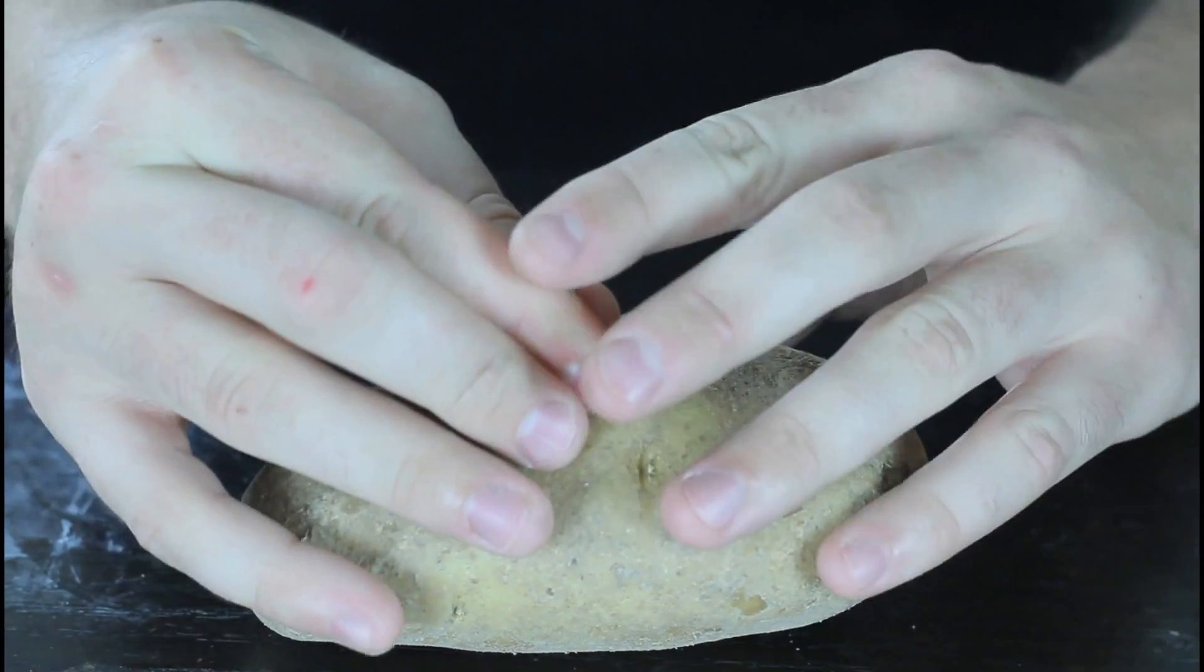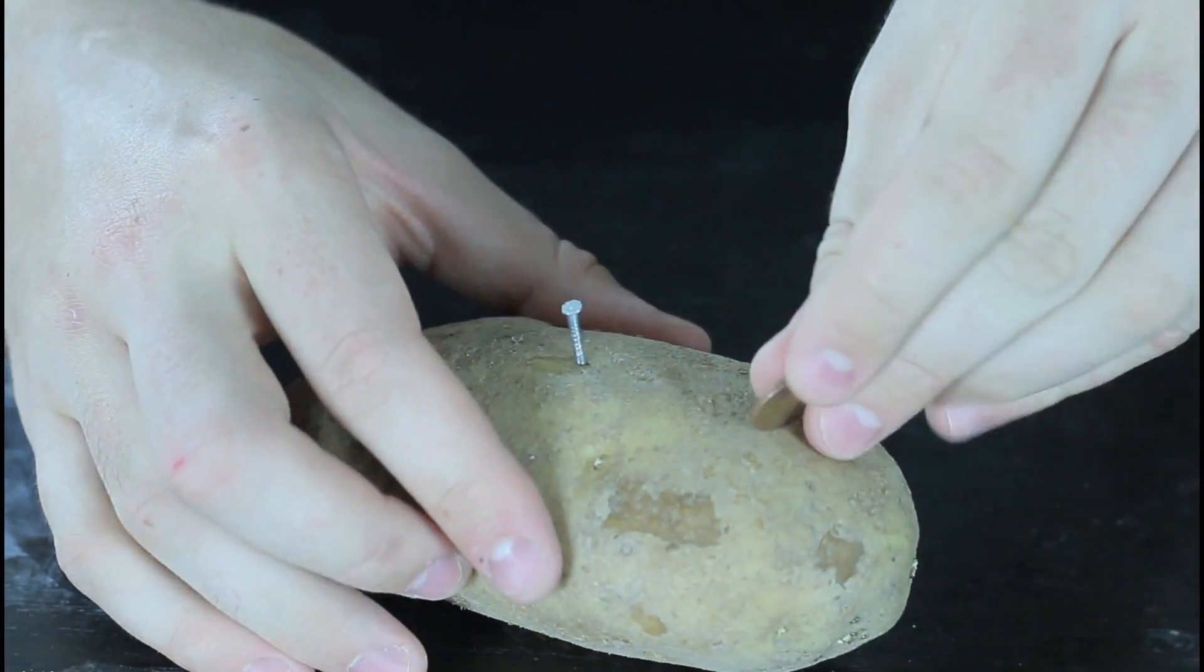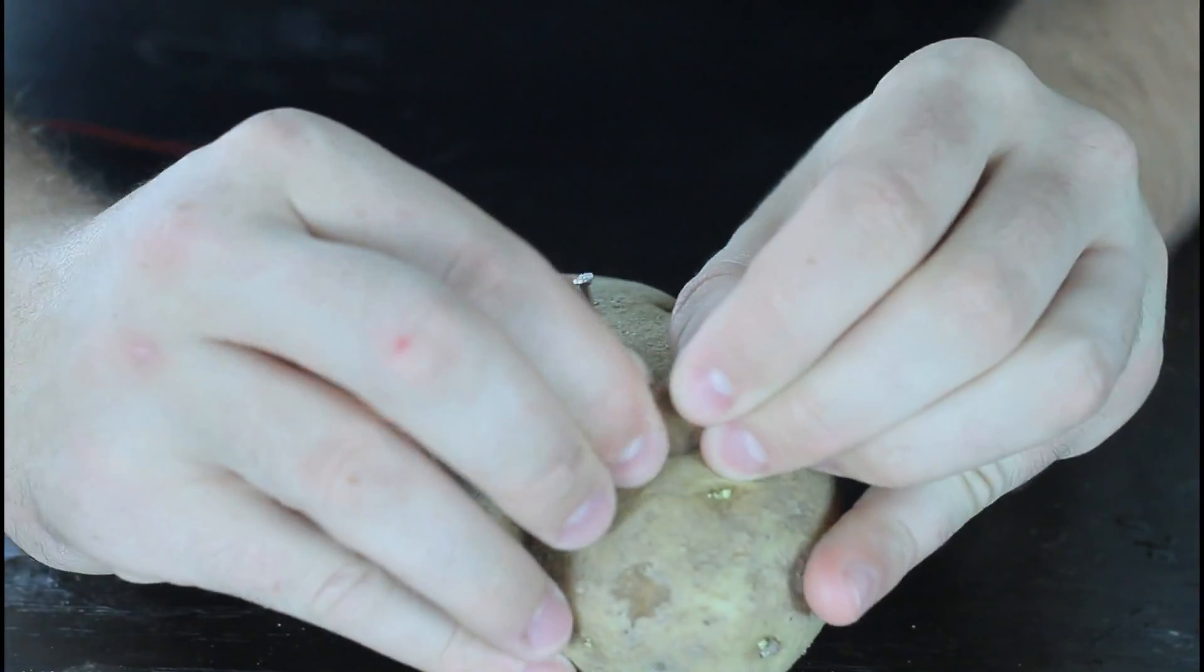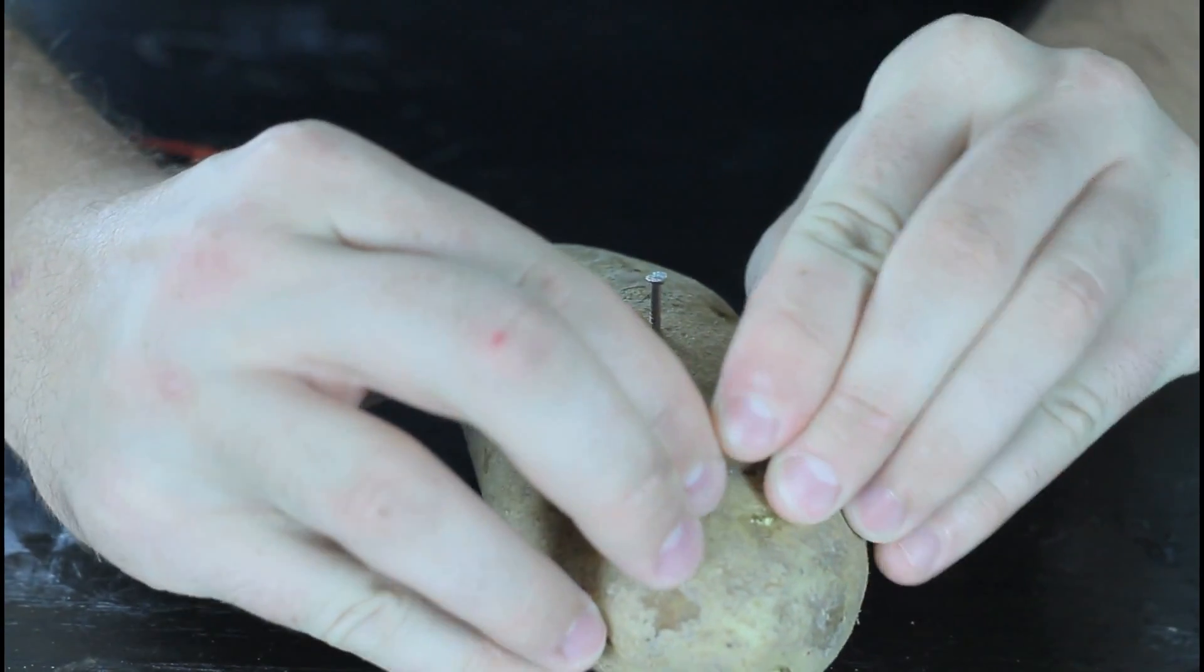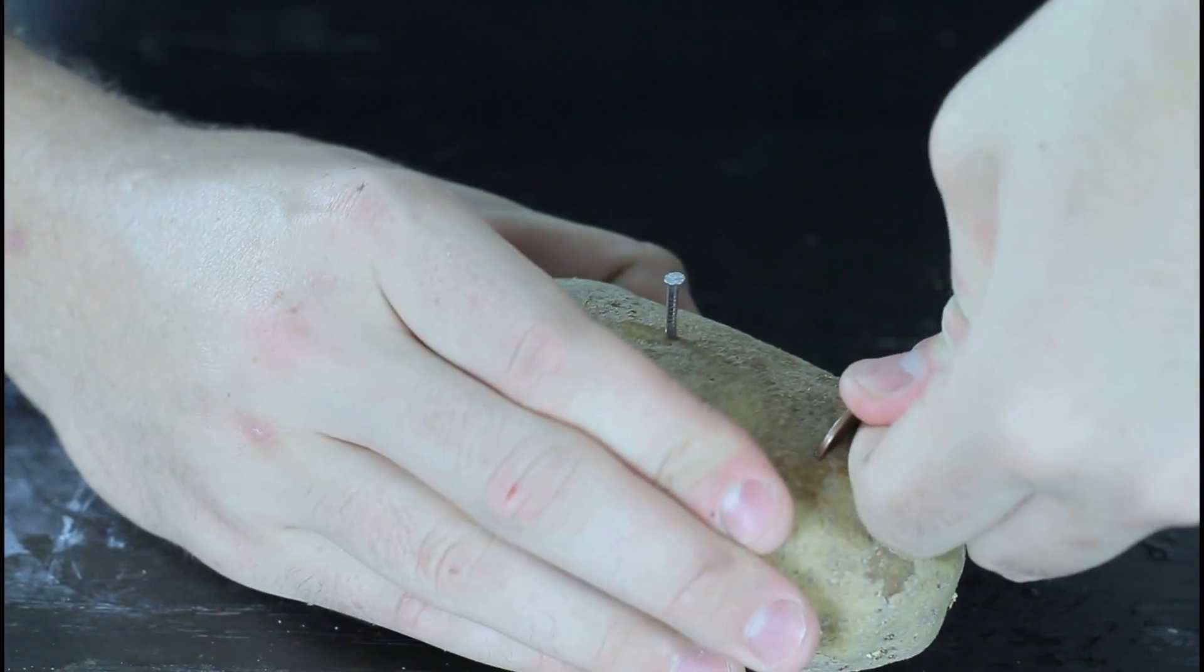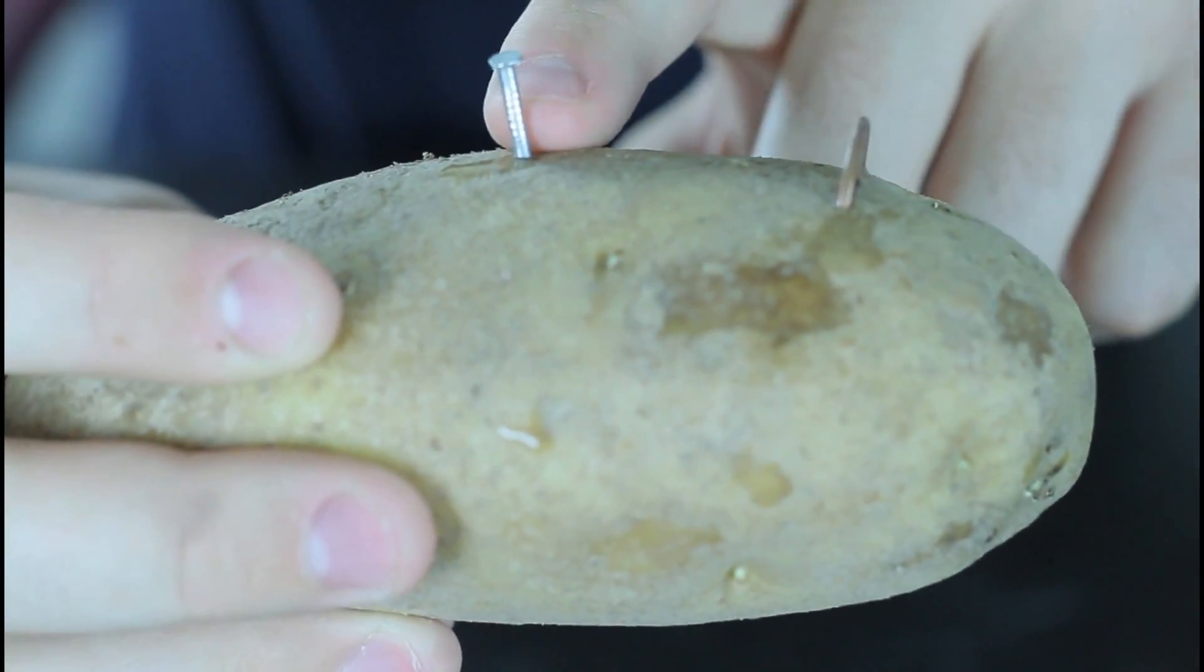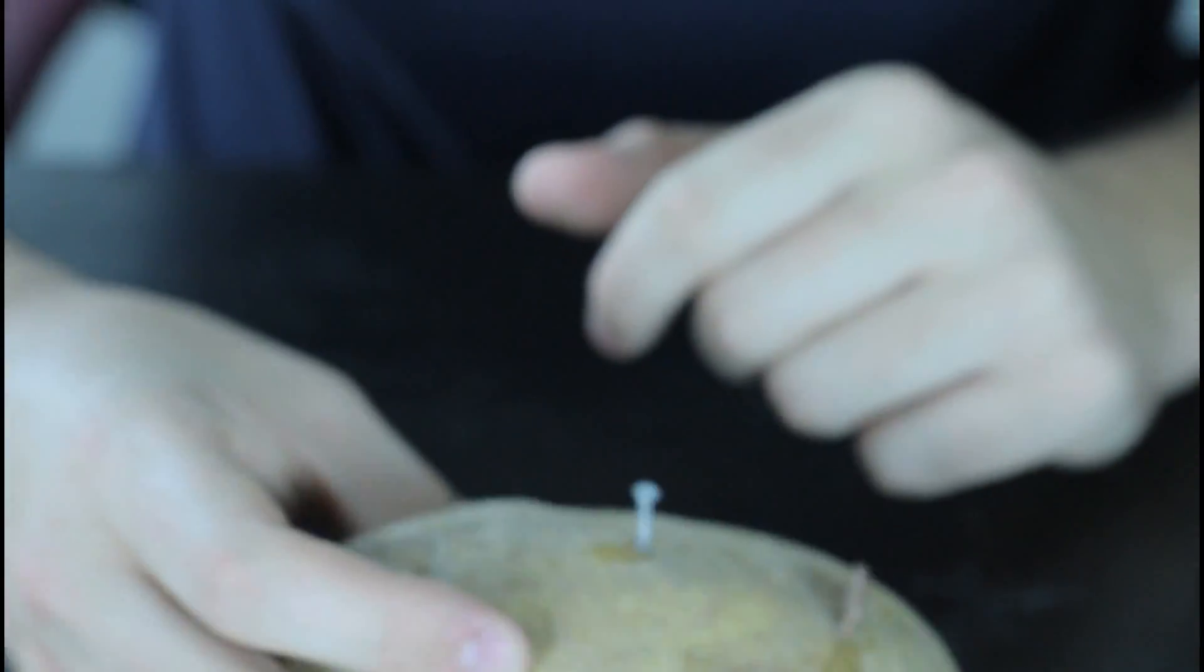Alright, we're gonna put a nail on one side and the penny on the other side. Like that. Just smash it in. It should be like halfway. Check it out. A penny right here and a nail right here. We're gonna do that with the rest of them.